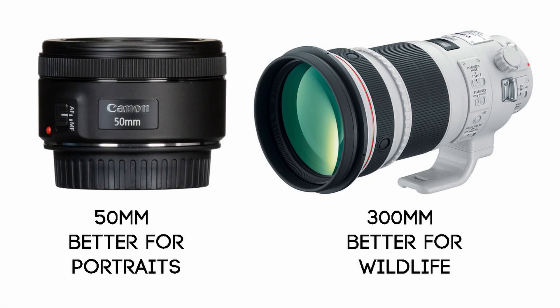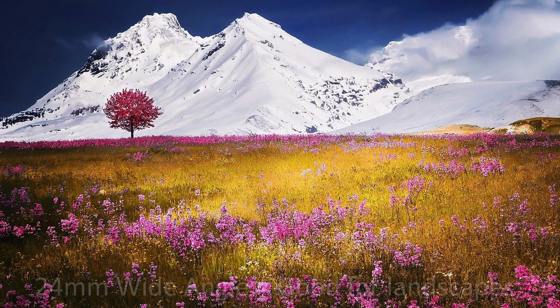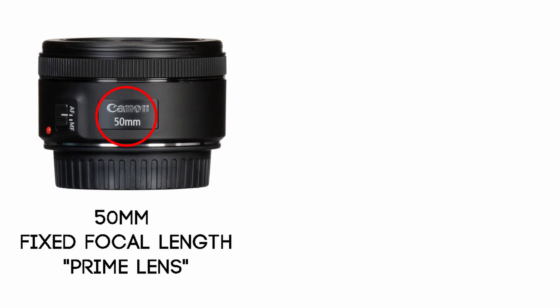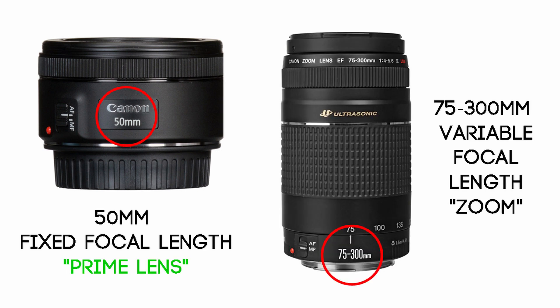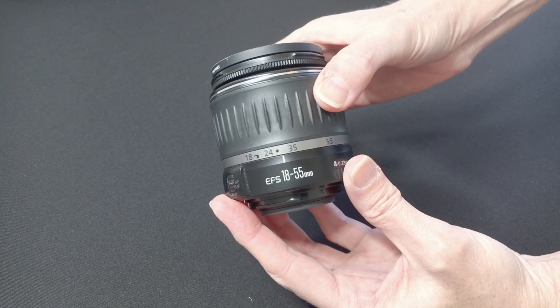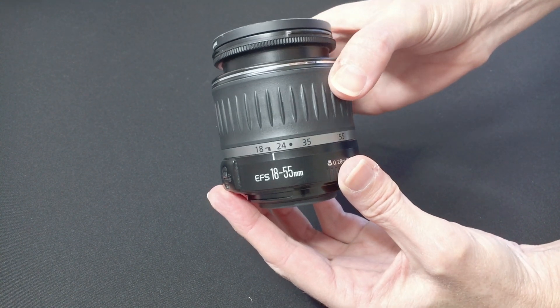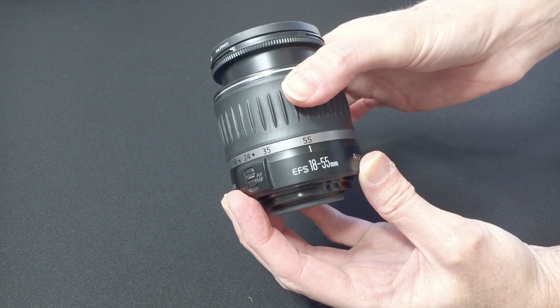Different focal lengths are better for different types of photography, so understanding the difference between a 50mm and a 300mm is important. You will want to choose lenses that are the appropriate focal length for what you're photographing. Some lenses will have just one number, such as 50mm — this is a fixed focal length, called a prime lens. When you see a range of numbers, such as 18-55mm or 75-300mm, it means the focal length is variable, or it has a zoom. A zoom lens allows you to switch between focal lengths so you can shoot different subjects without changing lenses as often.